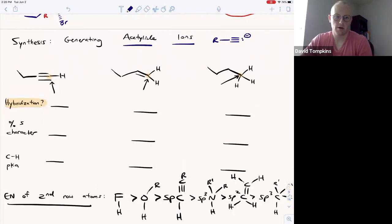So let's talk about why alkynes are acidic. The hybridization of an alkyne carbon is sp, while that of an alkene is sp2 and an alkane is sp3.